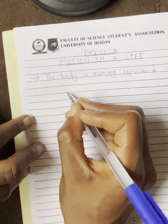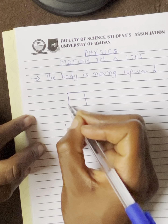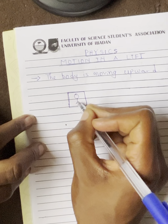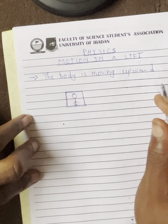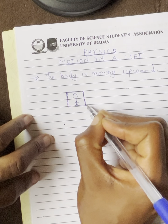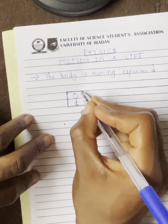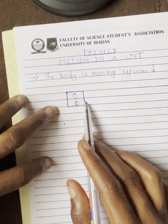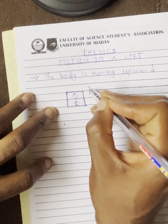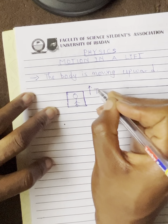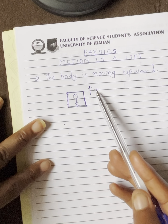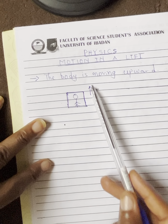Let's assume that this is the body, this is the lift, and this is the body in the lift. Now the body is moving upward. There is a force in the lift, and that force is called tension. Tension is always an upward force. So there is a force in the lift which is tension, and the tension is acting upward.